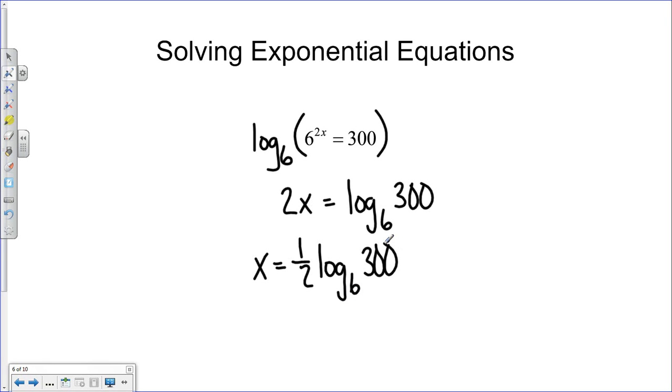And I could even go a step further and I could have a power on the 300. A 1 half power is a square root. So I could even take this a step further and say that this is the log base 6 of 10 square root of 3. Now what I did there was I took the square root of 300. I teased out the 100 which is 10 squared. So I brought that 100 out in front of the square root as a 10. 10 squared is 100 leaving a 3 inside that square root.